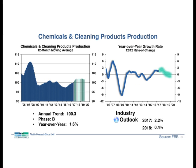Here we have U.S. chemicals and cleaning products production, currently up 1.6% year over year in a Phase B accelerating growth trend. We expect that trend to persist into early 2018, finishing 2017 up 2.2% year over year before slowing to about 0.4% growth as of 2018. We do expect a mild recession in 2019 — you can see our forecast error bars just kiss the zero line, and any recession is likely to be just around 0% growth, more of a period of slower growth as opposed to a true recession like we saw about ten years ago.